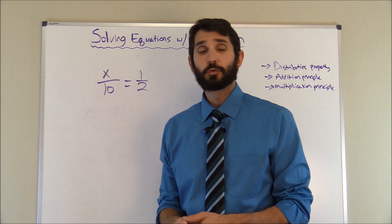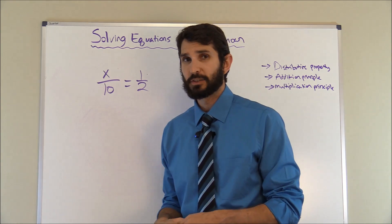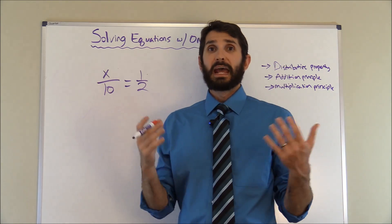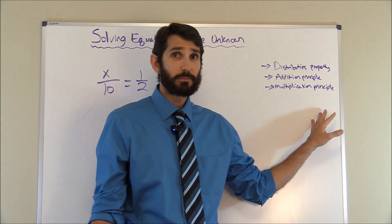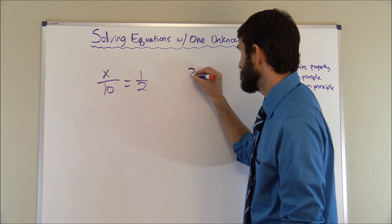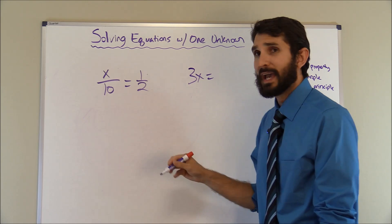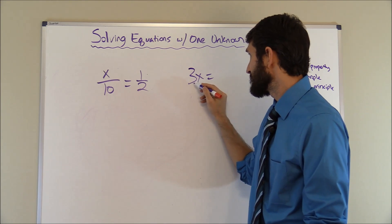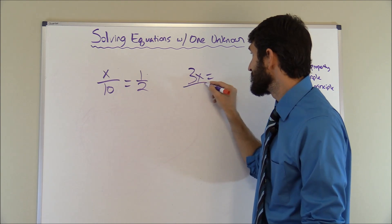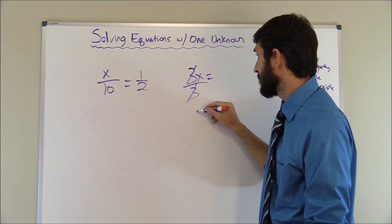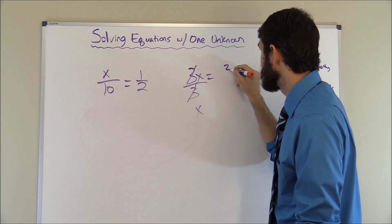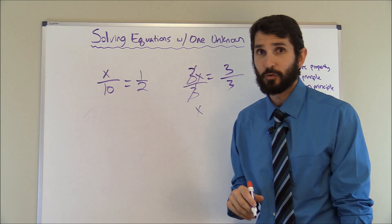Now let me show you one of these in fraction format, because they will have these on the tests. Here we have X over ten equals one half. If you remember in the last equation, when we had three X equals some number, we divided by three to get rid of the coefficient and leave just X. It's the same principle here — but since it's division, we do the opposite, which is multiplication.